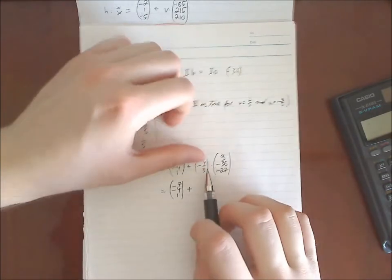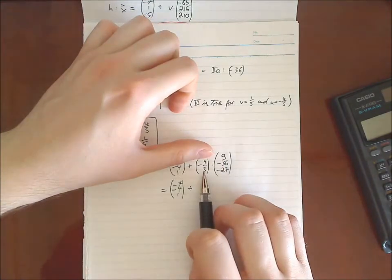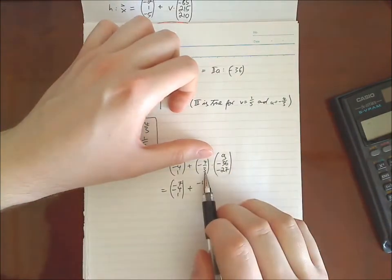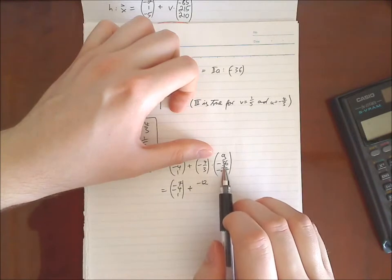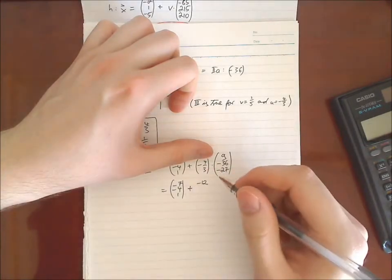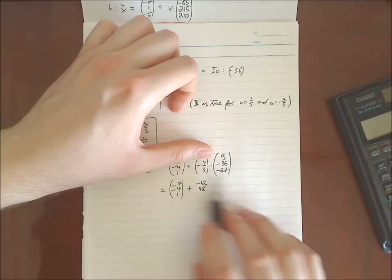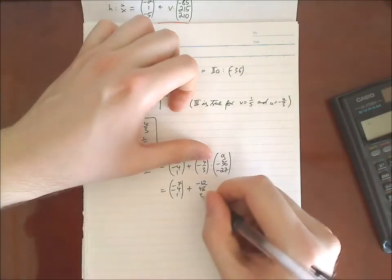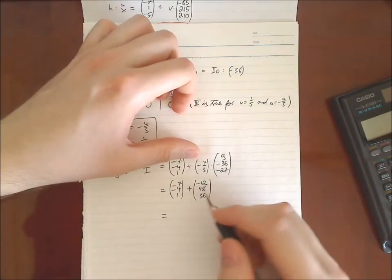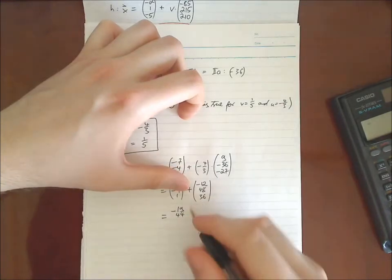So, we have nine times minus four thirds. Nine divided by three is three. So, three times four is twelve. Minus twelve. Thirty-six divided by three is twelve. Twelve times four is forty-eight. Minus and minus is plus. So, we said forty-eight. Twenty-seven divided by three is nine. Nine times four is thirty-six. And minus times minus is positive. So, this is what we end up with. Minus seven minus twelve is minus nineteen. Forty-eight minus four is forty-four. Thirty-six plus one. Thirty-seven.